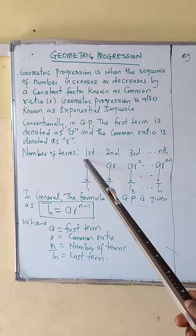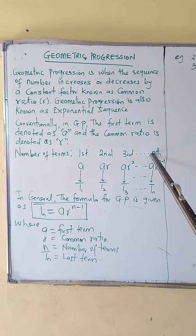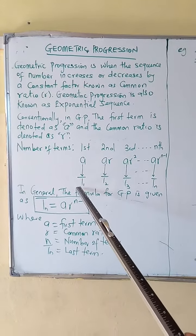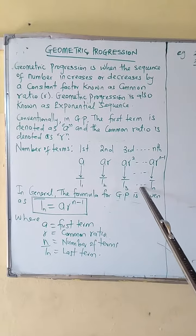Now, let us look at the number of terms. If you have first term, second term, third term, and nth term, they are represented as T1, T2, T3 to Tn.